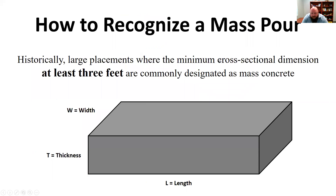How do you recognize if you're going to have a mass pour? Historically, anytime you're going to have large placements where the minimum cross-sectional dimension is at least three feet, that's generally considered a mass pour.